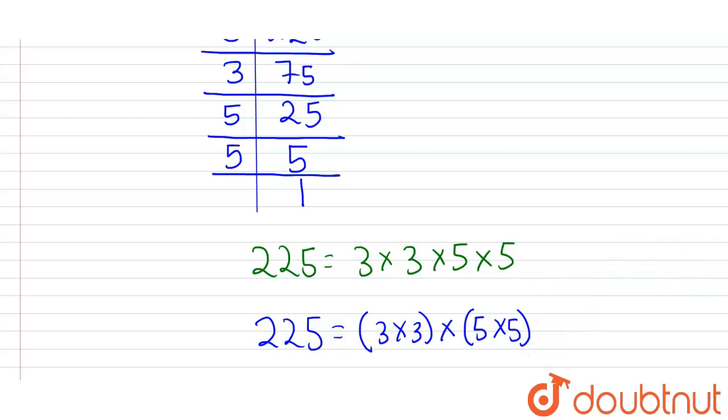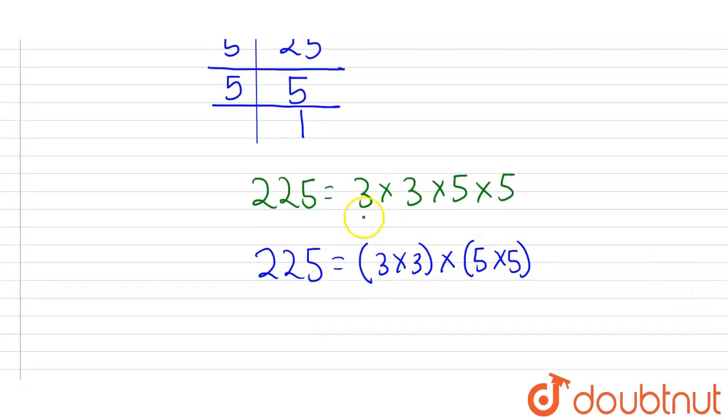Now we can see that we have successfully made these equal pairs and no remaining factors are left. Therefore, this is a perfect square.